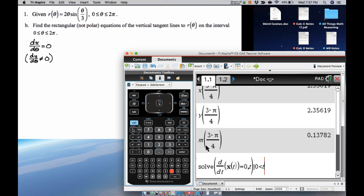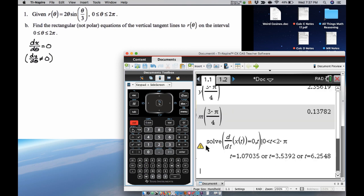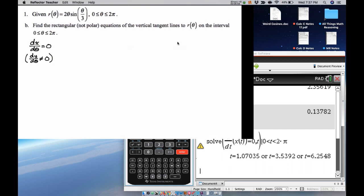So let's get some answers there. So there's three values on the interval, which kind of corresponds to the three places that I thought might have vertical tangent lines. So let's jot those down. So these are our theta values. We get theta's approximately 1.070, and then about 3.539, and then about 6.255. So those are the values.